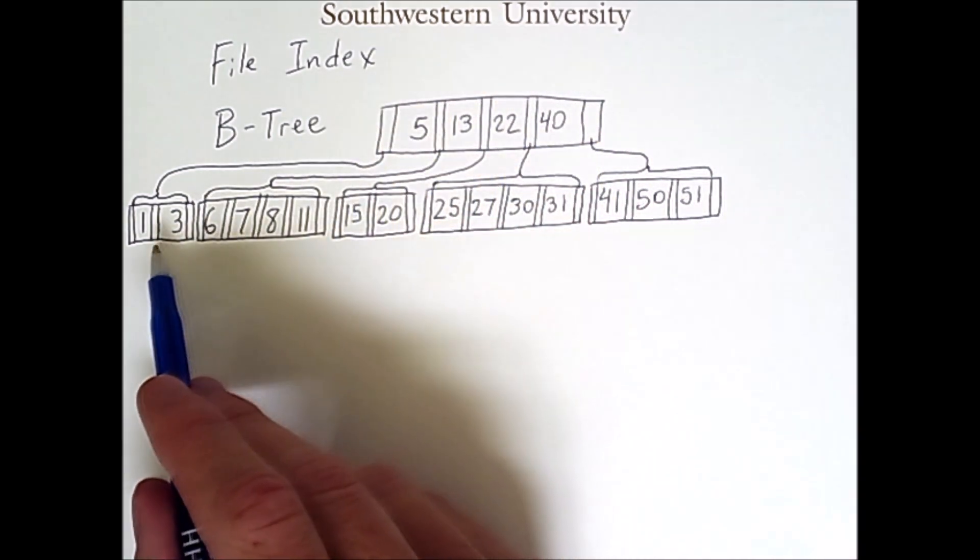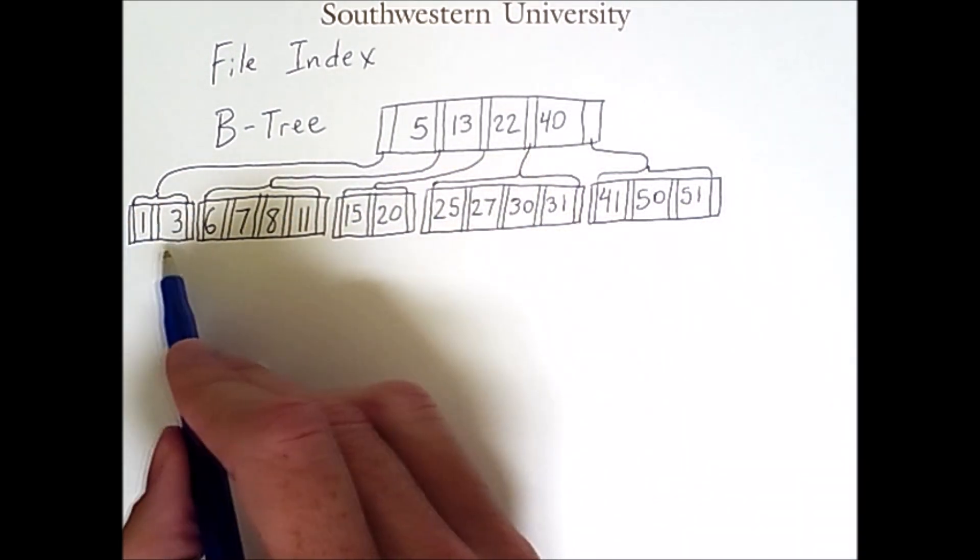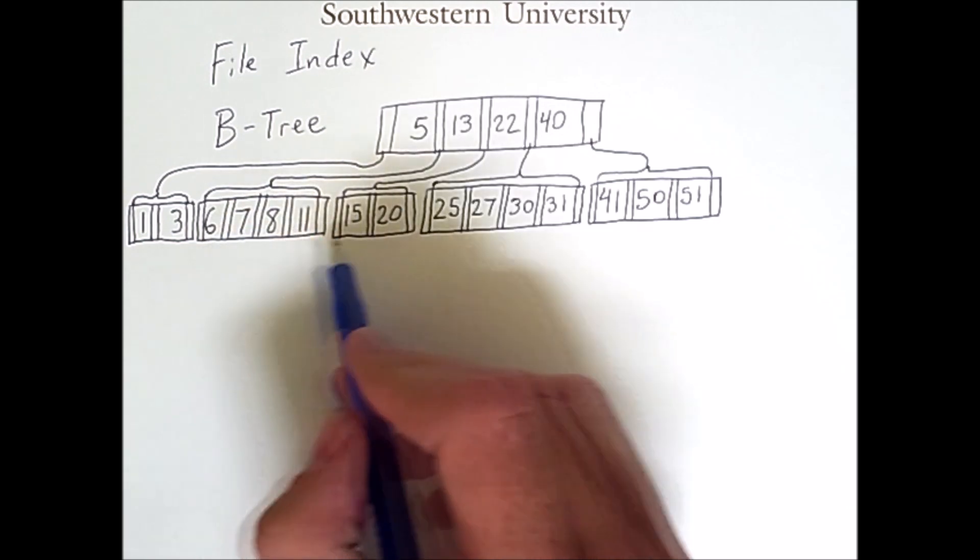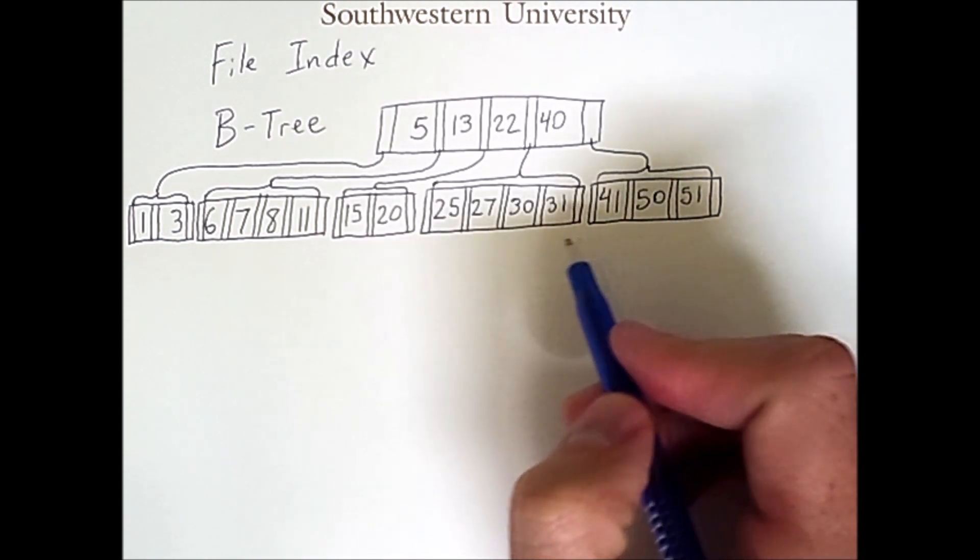And you'll notice that different nodes can be of different sizes. So this node has two keys, this node has four keys, two, four, and three.